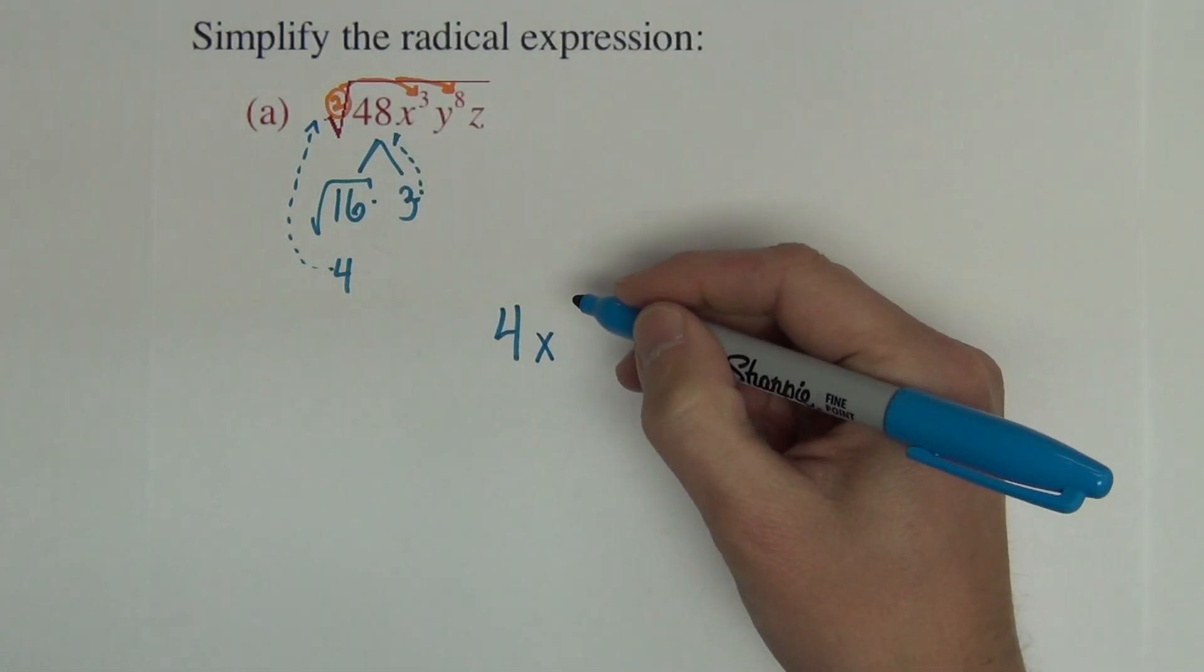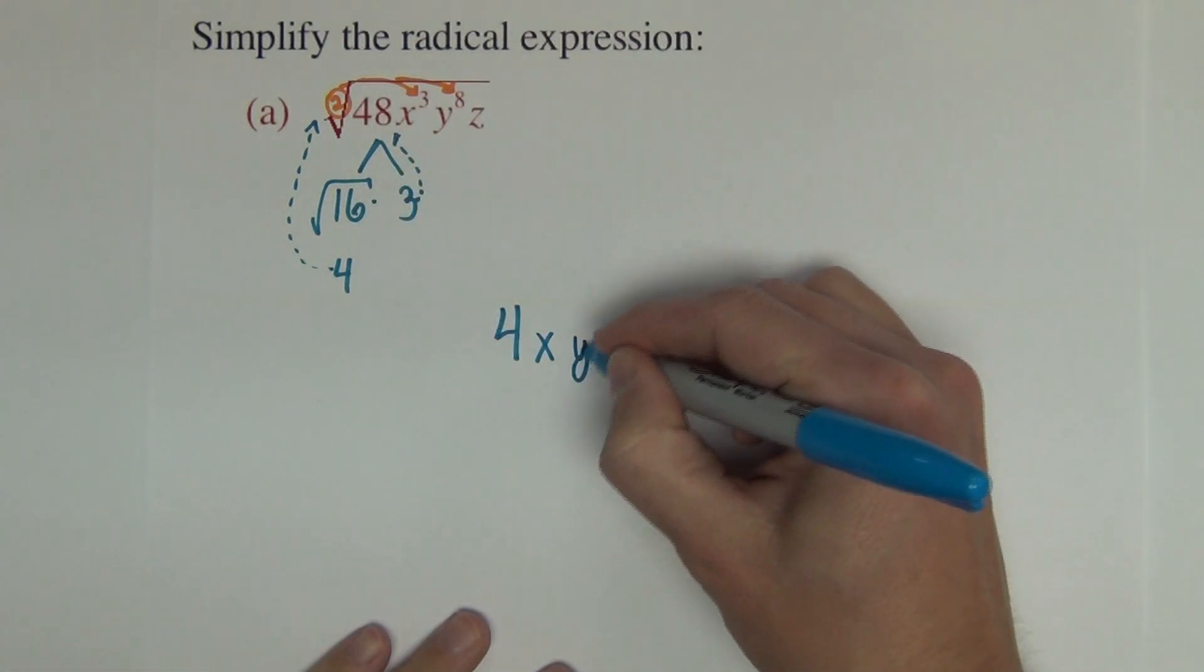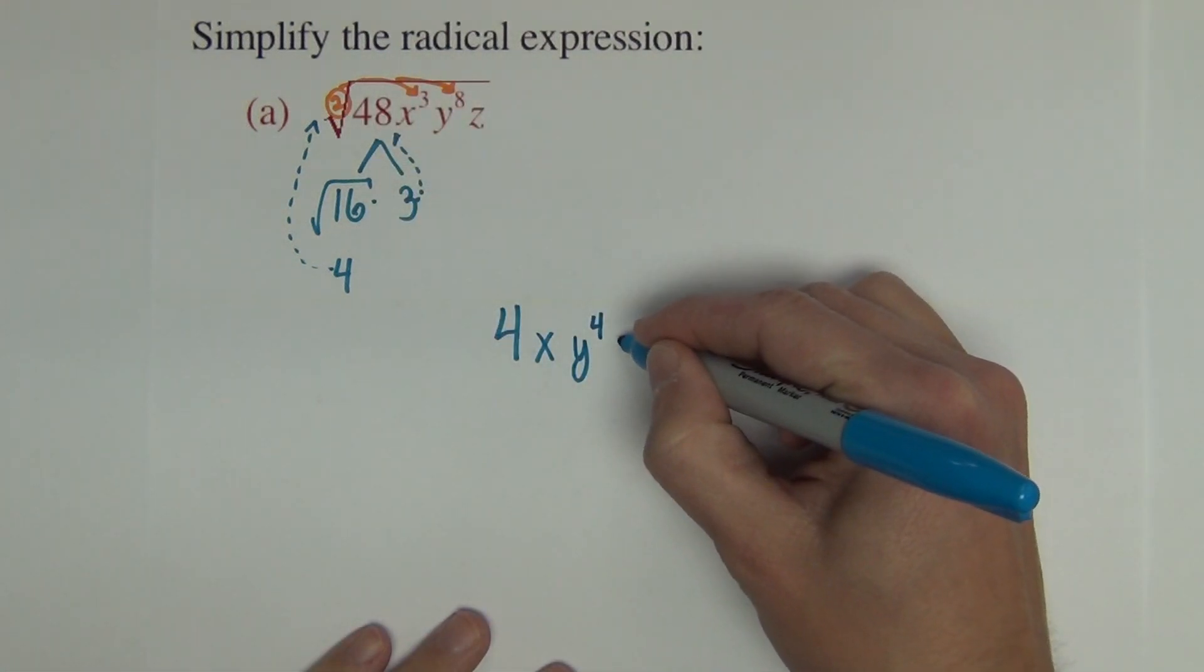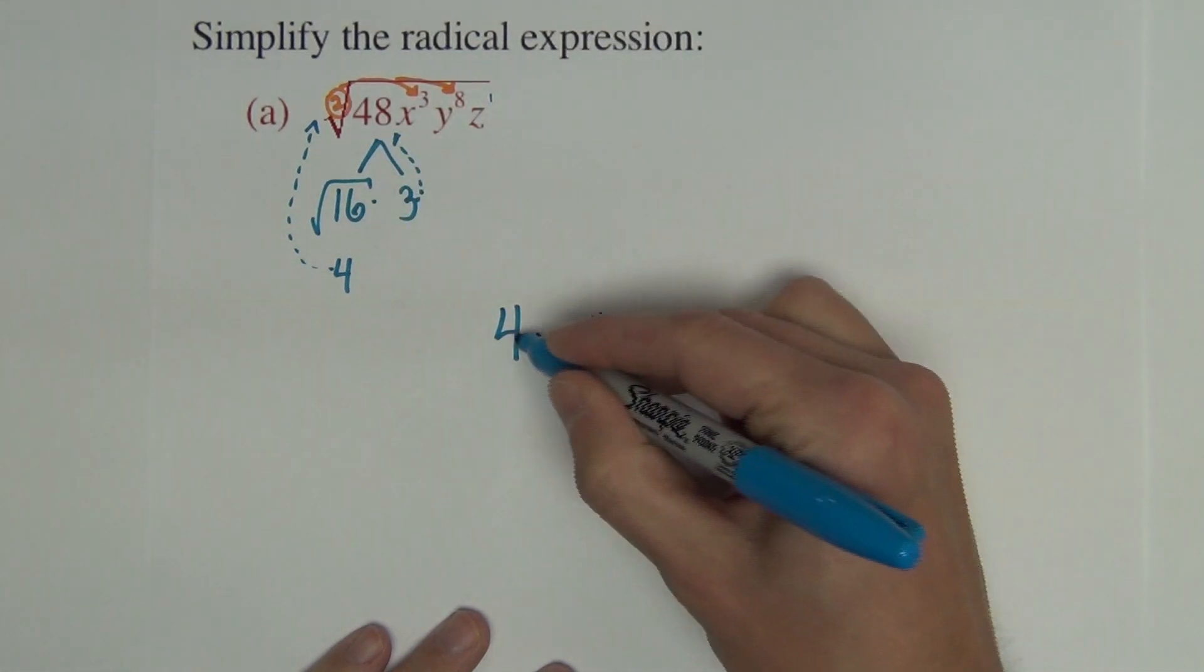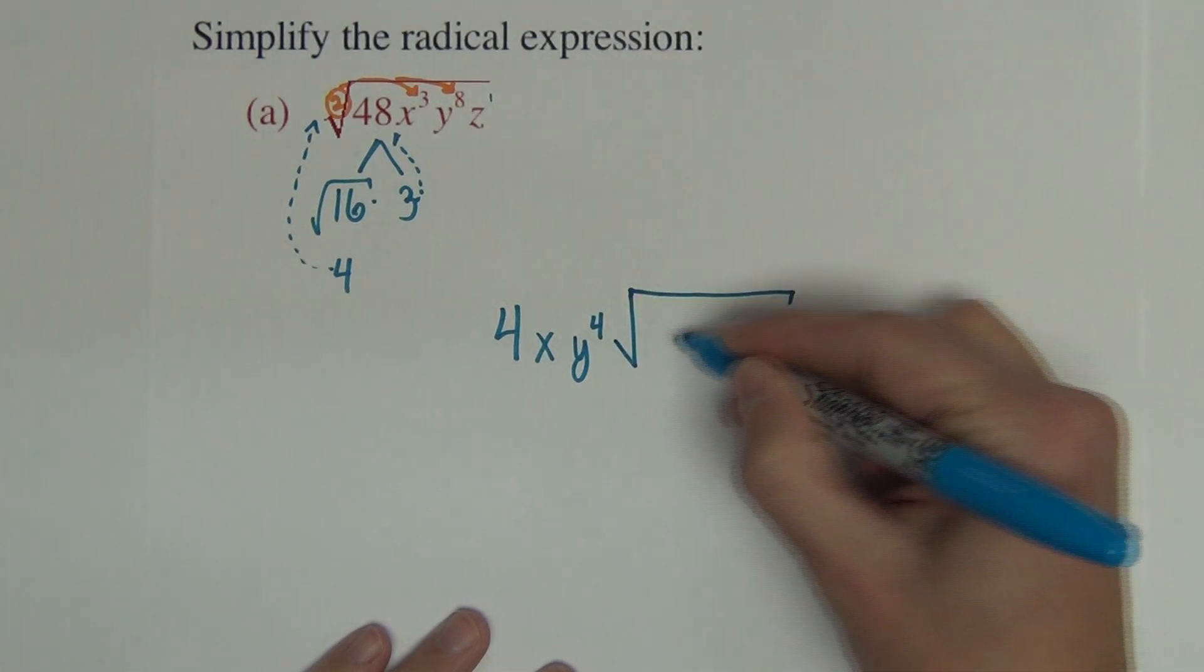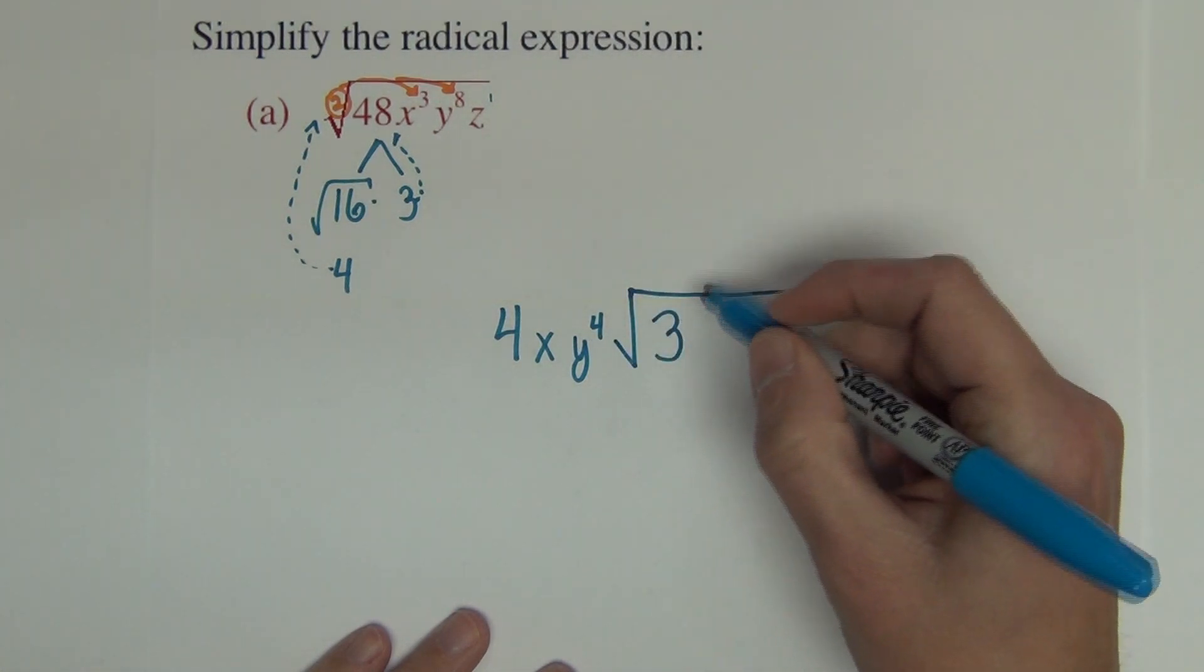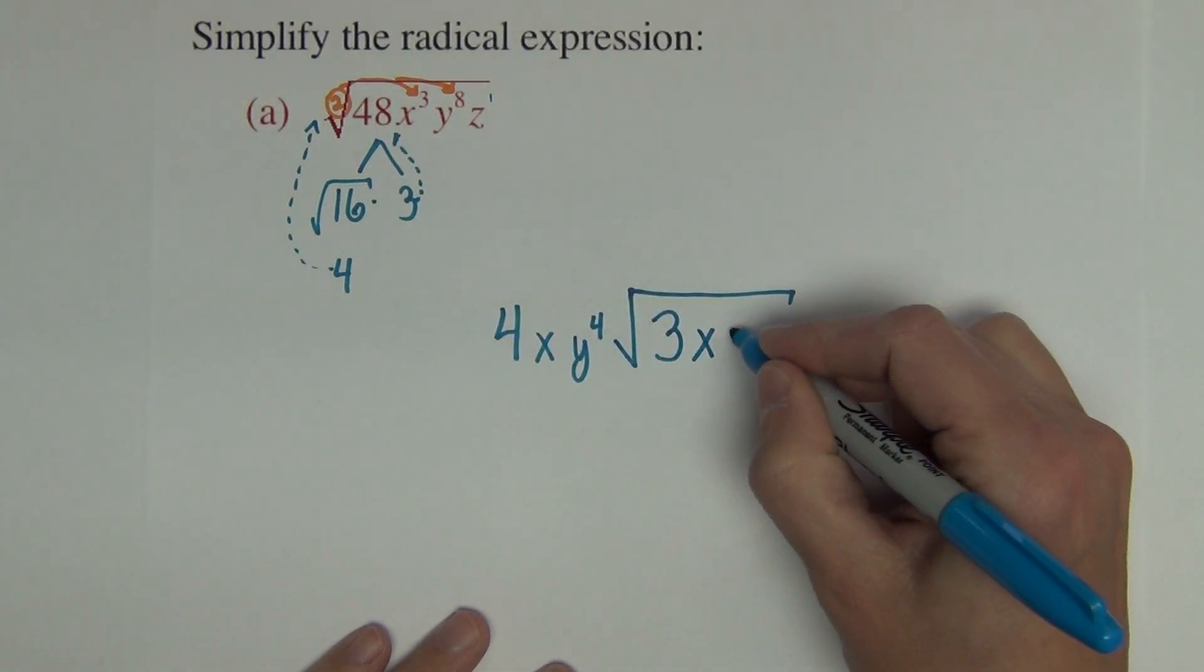2 goes into a power of 3 one time. So x comes out once. 2 goes into a power of 8 four times. So y to the 4 comes out. 2 does not go into the power of 1. So that's going to stay. So we have 4xy to the fourth times the square root of 3. That's left over from the 48. We've got an x and we've got a z.